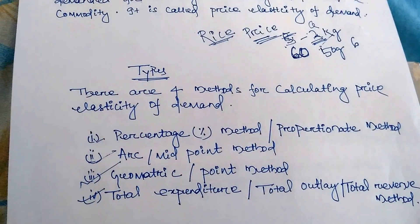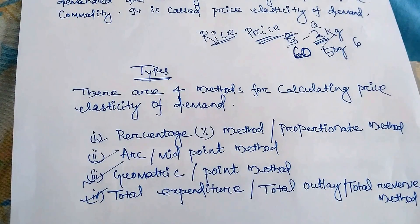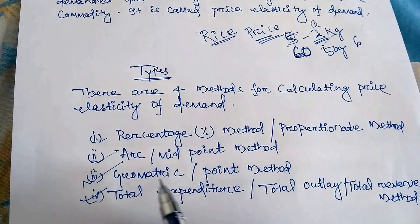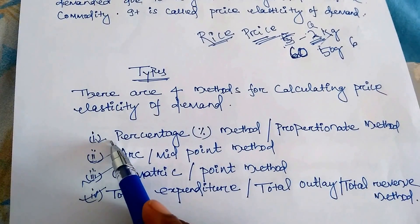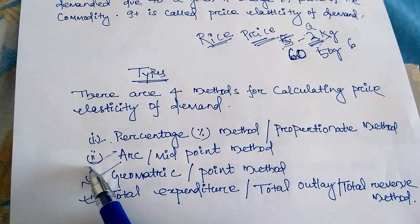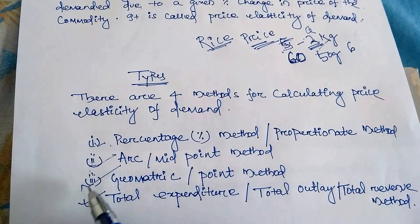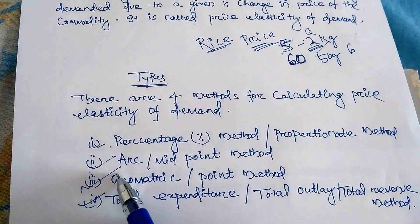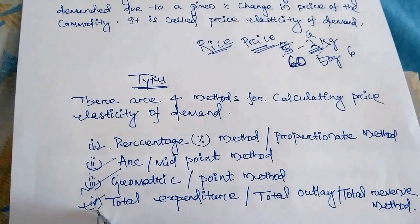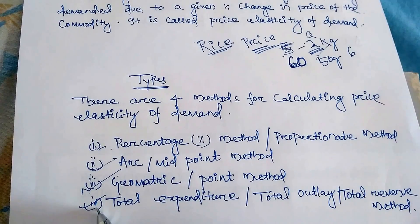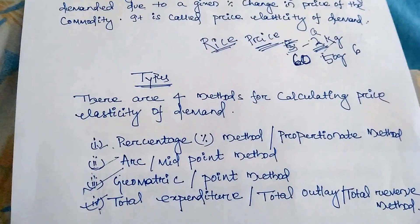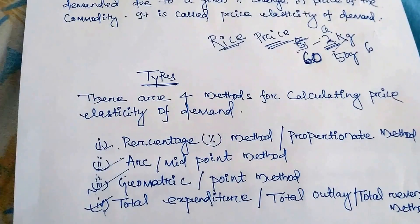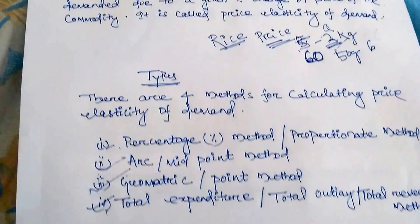There are four methods for calculating the price elasticity of demand. First is the percentage method or proportionate method. Second is the arc or midpoint method. Third is the geometric or point method. Fourth is the total expenditure, total outlay, and total revenue method. We will define these one by one.